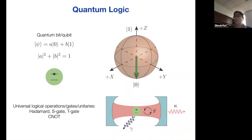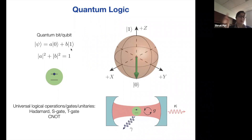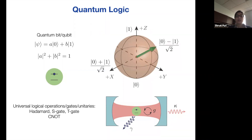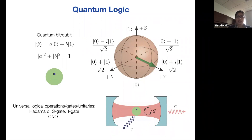In classical computation, we store information in the state of a bit, which can be zero or one. In quantum computation, we store a quantum bit in the superposition states of two orthogonal states of a system. This can be a superposition like a|0⟩ + b|1⟩. We can represent the dynamics of this qubit on the Bloch sphere. The state of your qubit can be along the Z axis — zero or one — along the X axis, which is even and odd superpositions of zeros and ones, or along the Y axis, which is the other superposition states.